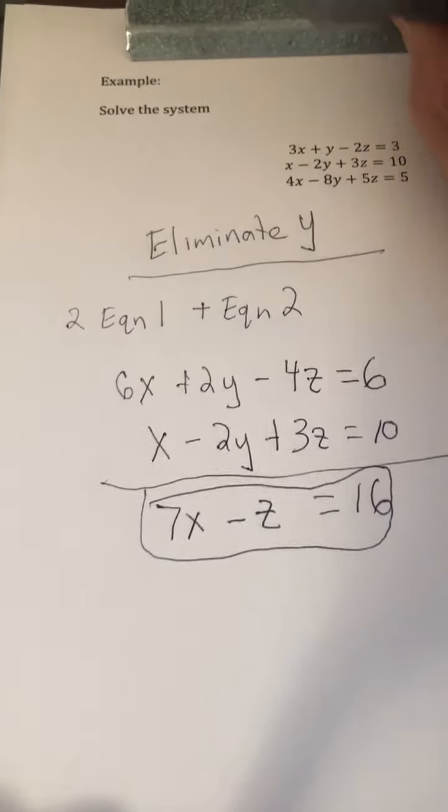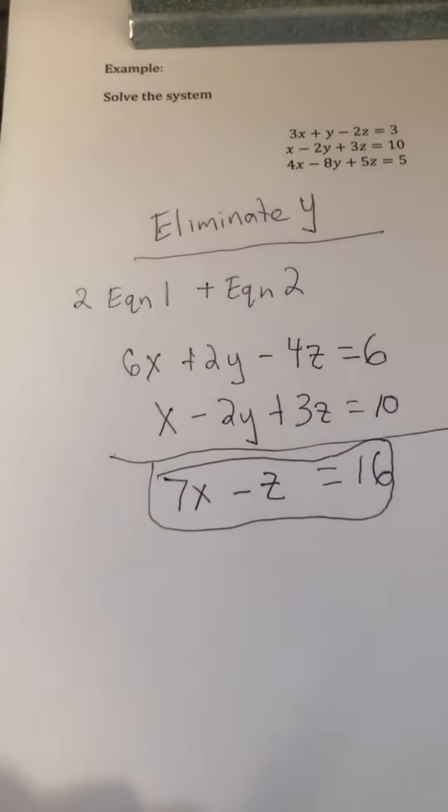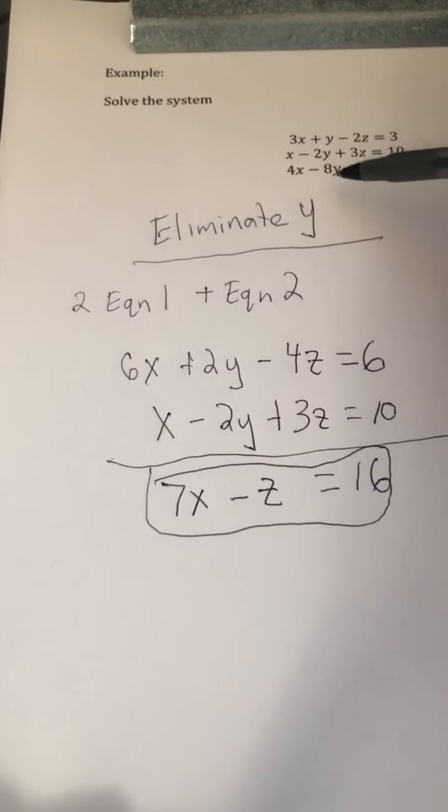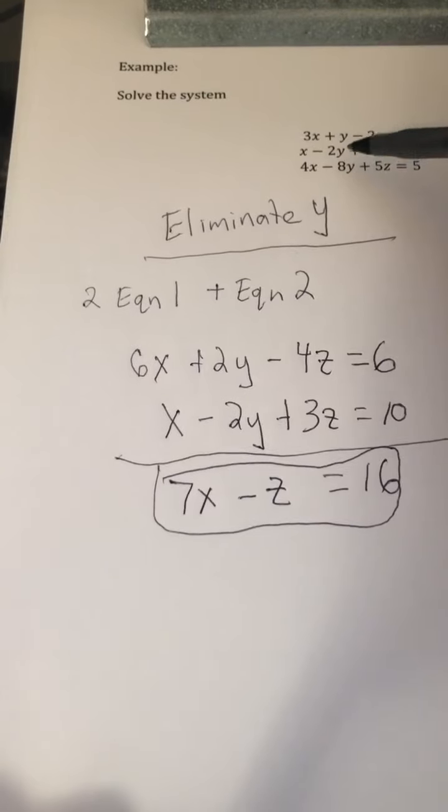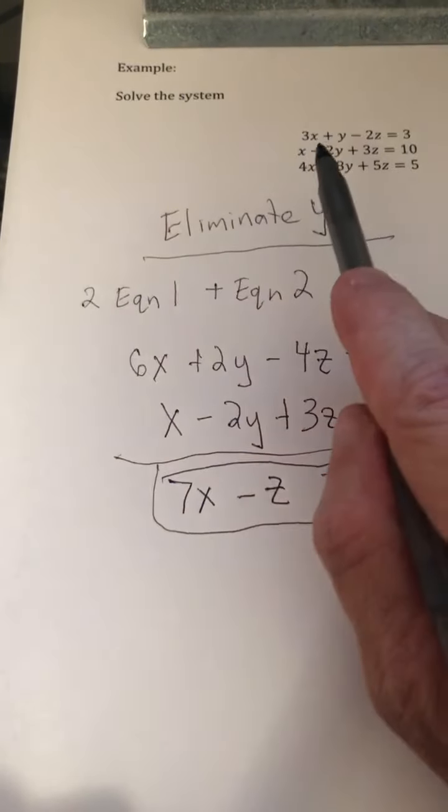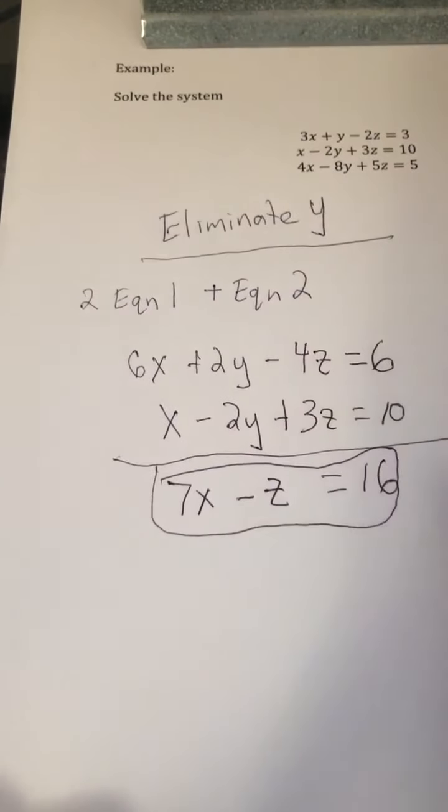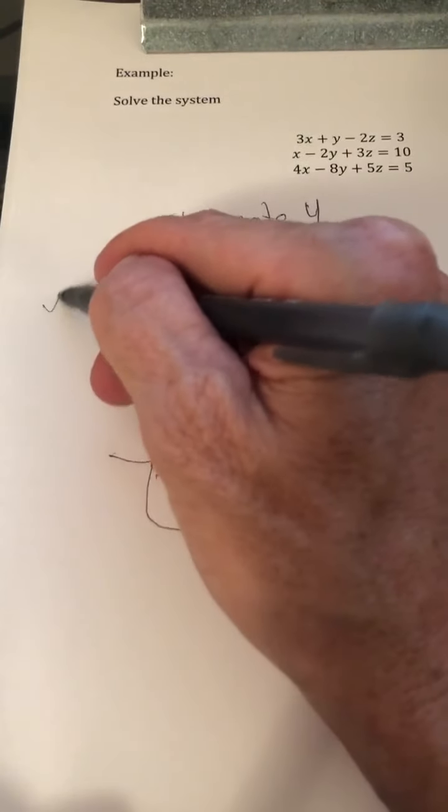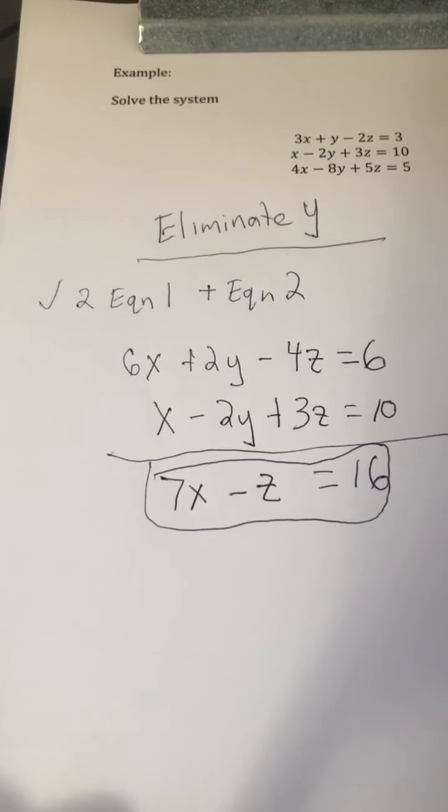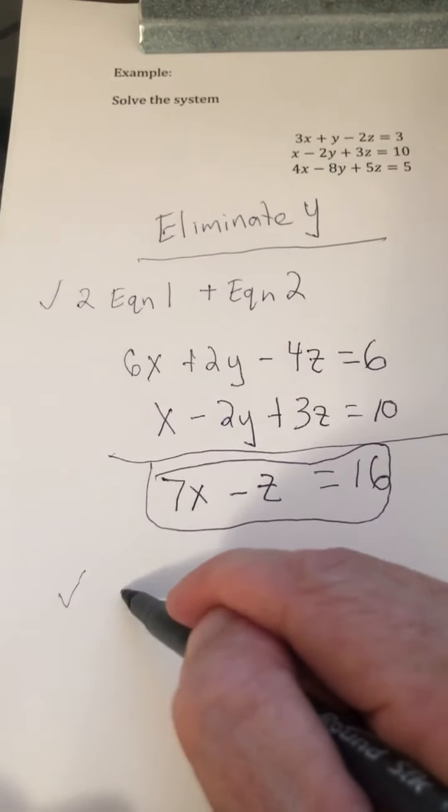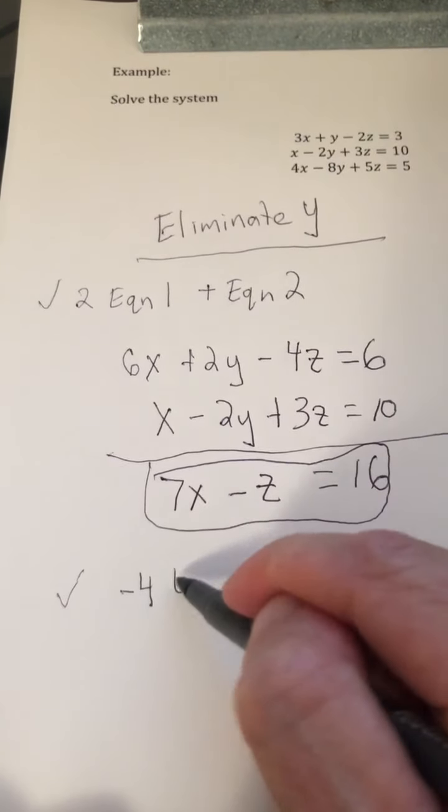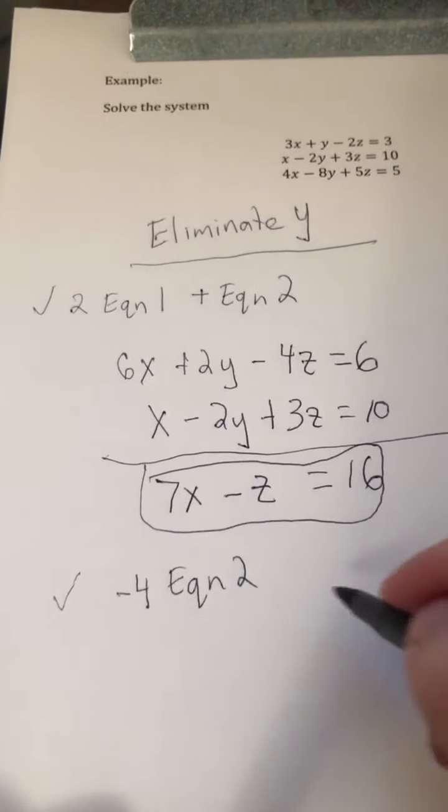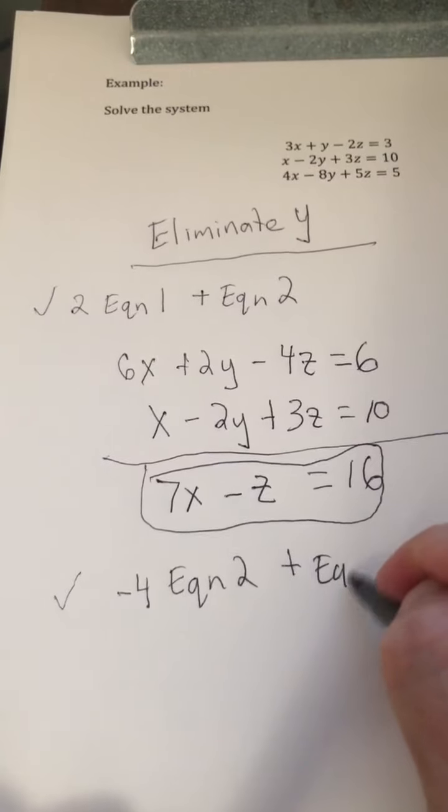But now I need to also somehow incorporate equation 3. So notice that I want the coefficients of y to be equal but opposite. So if I multiply equation 2 by negative 4, that will get the coefficients of y to be 8 and negative 8. So we've already done 2 times equation 1 plus equation 2. Now we have to do negative 4 times equation 2 plus equation 3.